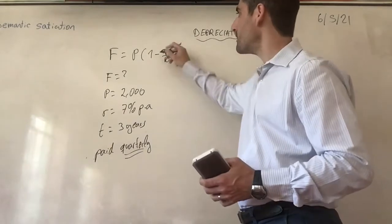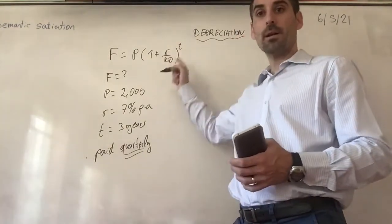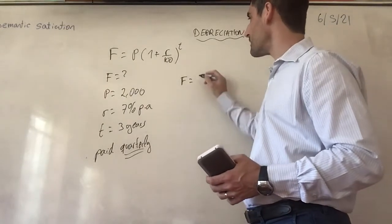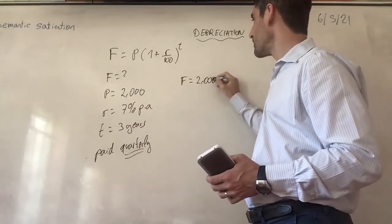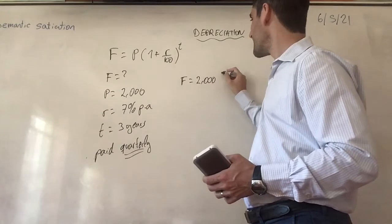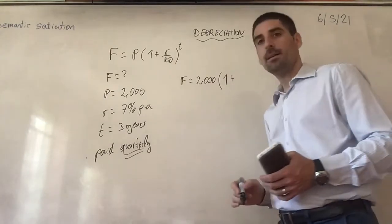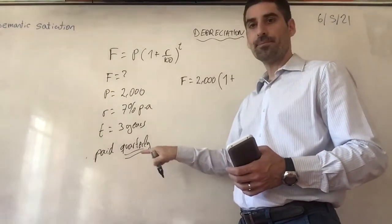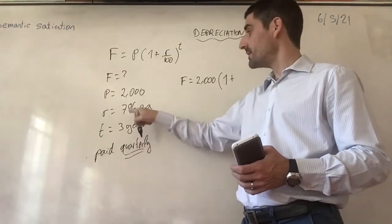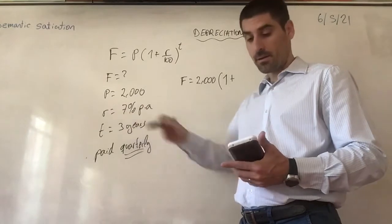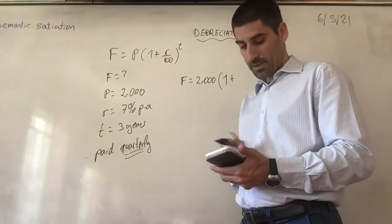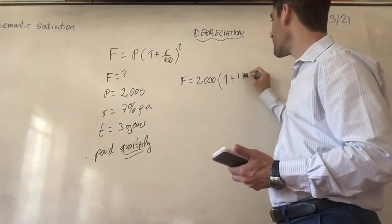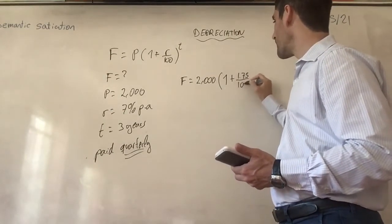Using the compound interest formula with a plus for future value, it's going to be the principal two thousand, times one plus — because the interest rate is paid quarterly, this is the interest rate per year, so I need to adjust it: seven divided by four, as there are four quarters in the year, giving one point seven five over a hundred. I need to change the interest rate from annual to quarterly.